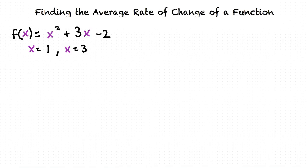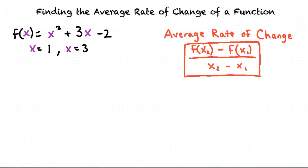To do this problem we need to know the equation for average rate of change. Average rate of change is defined in the following way: f of x2 minus f of x1 divided by x2 minus x1.